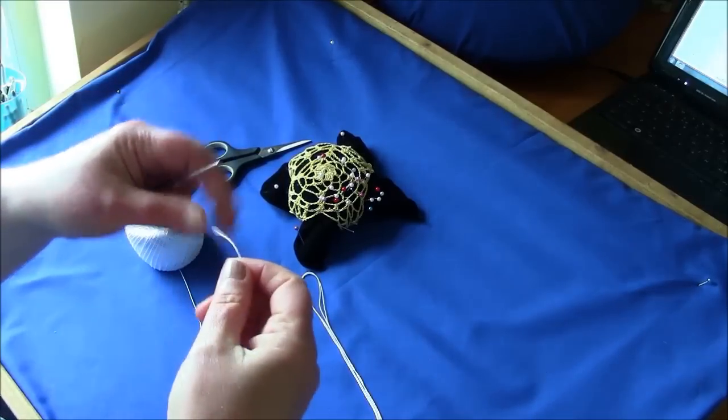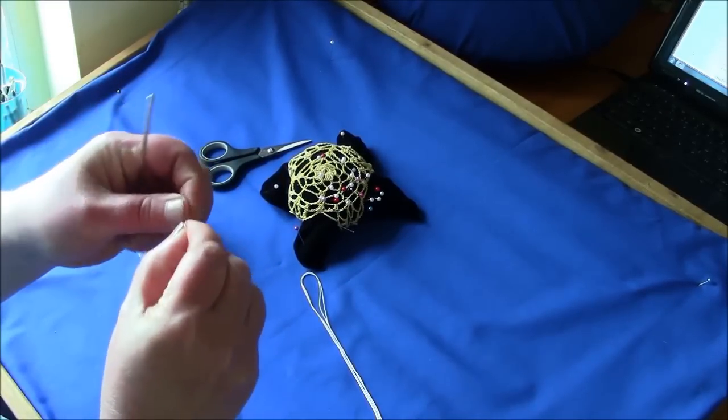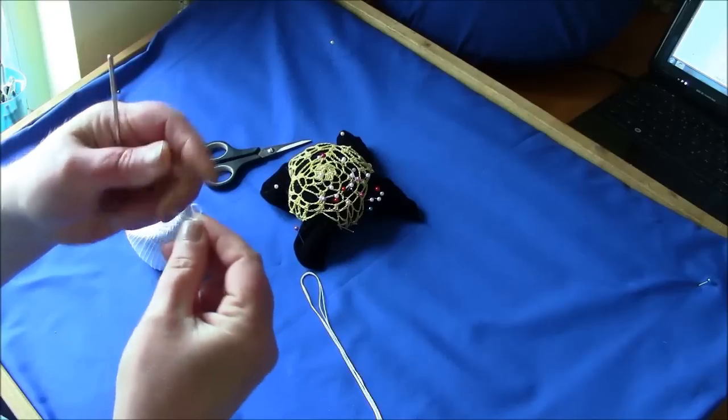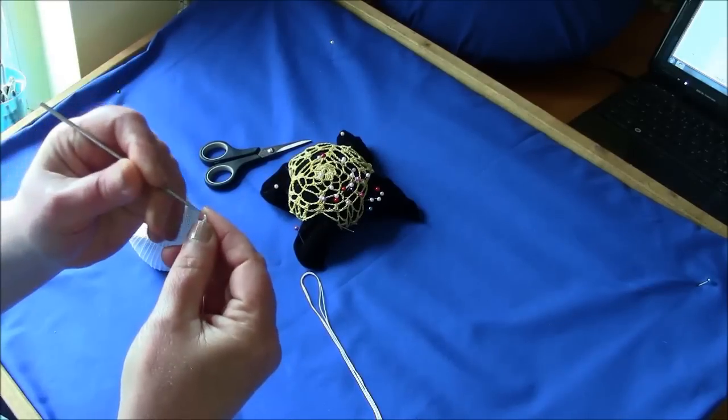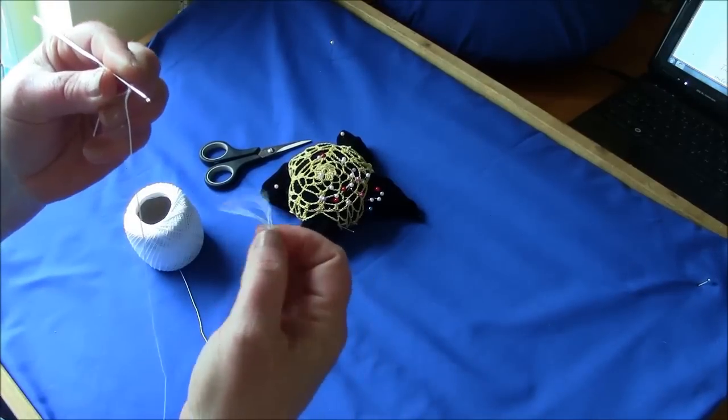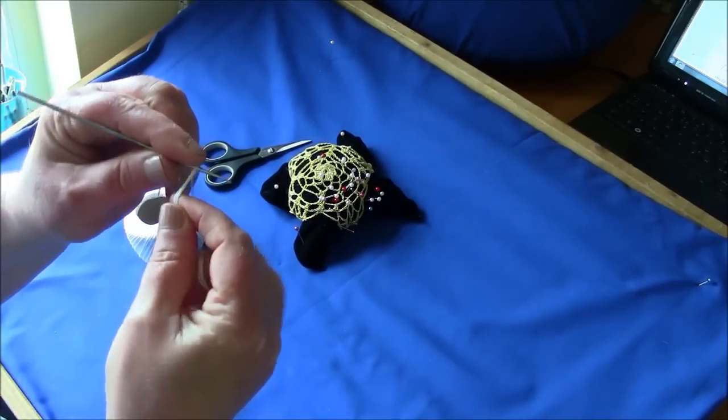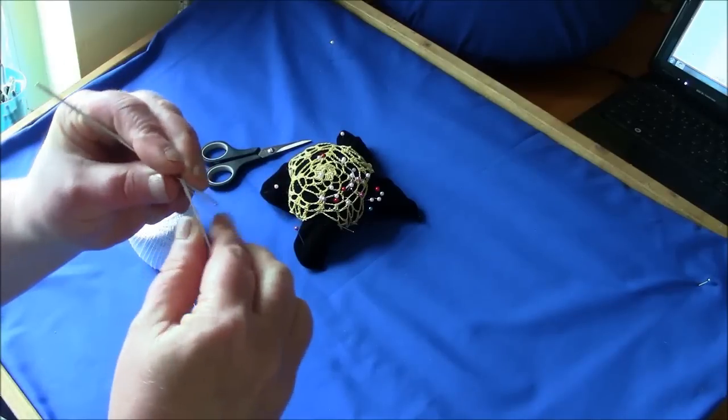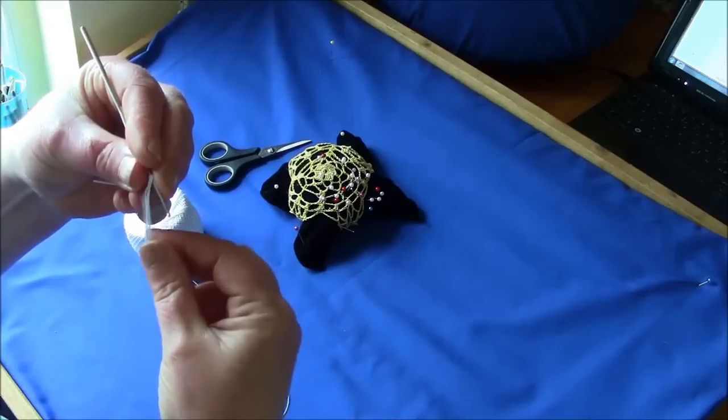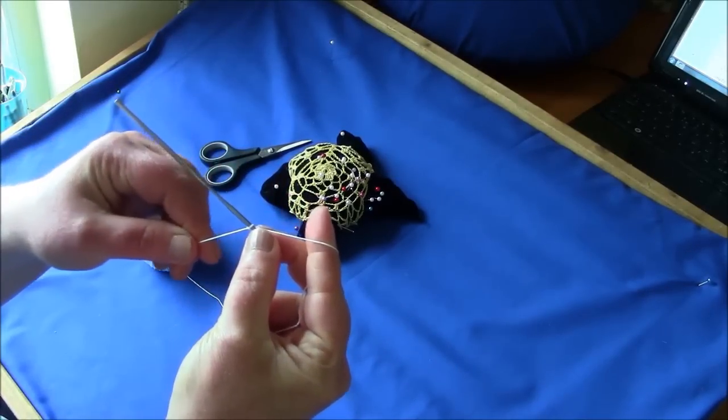Now make a starting loop. Insert the hook. Now place the hook in the loop between the 4 threads. And at first when you're learning to crochet over cord, hang on to this bit.